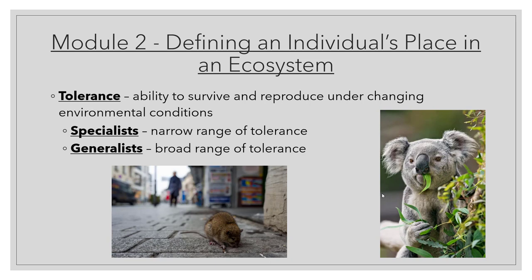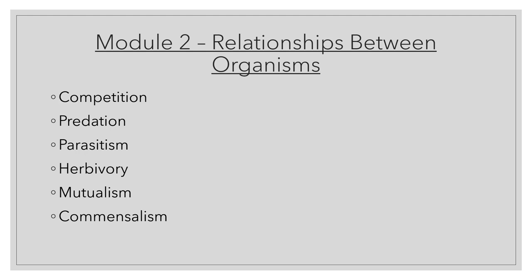Then you have generalists, like this rat in the city — a broad range of tolerance. They can eat a lot of different things and tolerate a lot of different conditions and temperatures, so they do well in lots of places. This will become important when we start talking about how relationships change when conflict is involved and why generalists can act one way and specialists can act in another.